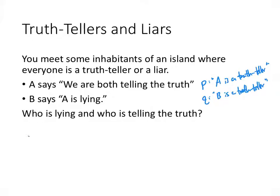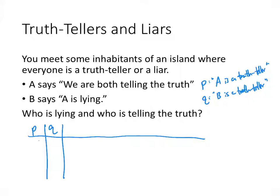Now we build a table listing all possibilities for P and Q. It could be that P and Q are both true — A and B are both truth-tellers — or P is true and Q is false, meaning A is a truth-teller and B is a liar, or false-true, or false-false. We look at the statements A and B made to figure out which of these four possibilities is actually correct.